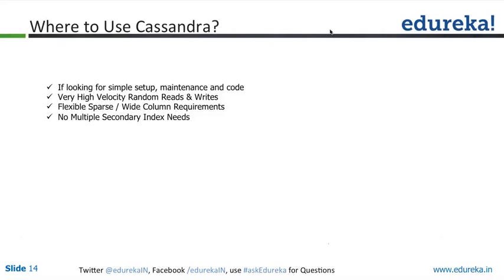Cassandra absolutely provides very high velocity of random reads and writes compared to other NoSQL systems because of the columnar storage capability and its distributed decentralized architecture. It also has flexible sparse wide column requirements — the capability to increase your columns for a specific type as and when you need. On a need basis, you can alter your schema and it has no restrictions on that.